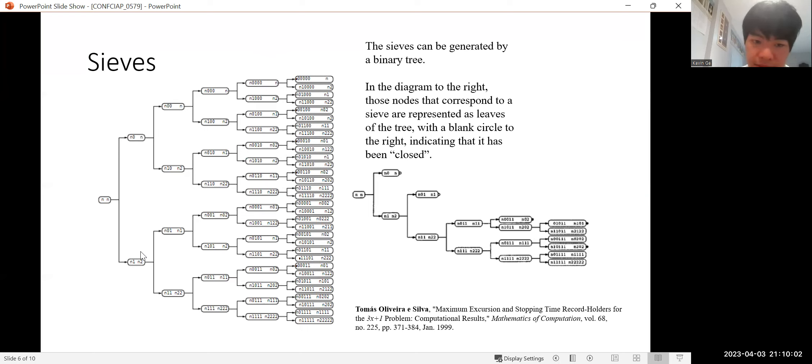And n1 means this number ends in a one in binary representation, which means this is the number of the form 2n plus 1. And similarly, from 2n, we can have 4n plus 0 and 4n plus 2. So from 4n plus 2, we can have 8n plus 2 and 8n plus 6, et cetera.